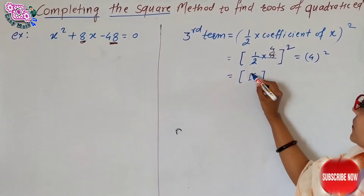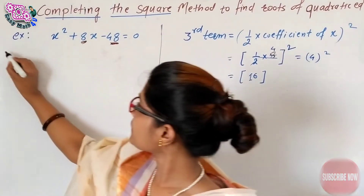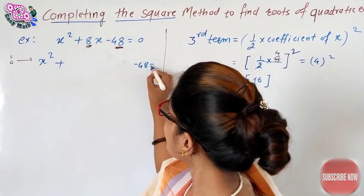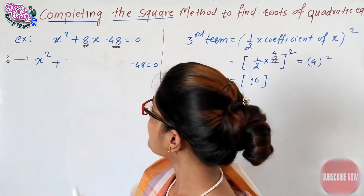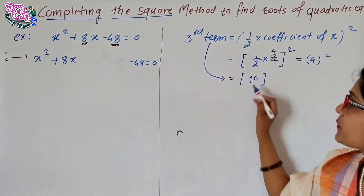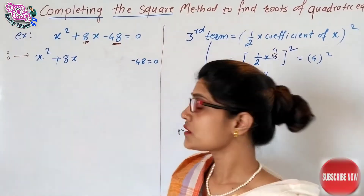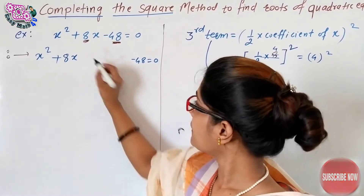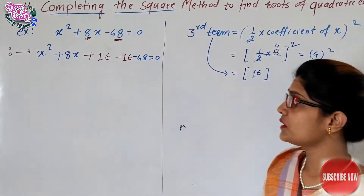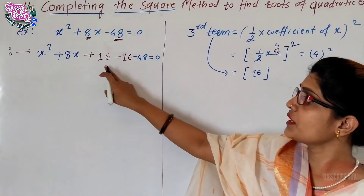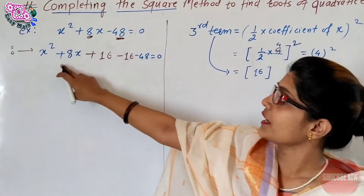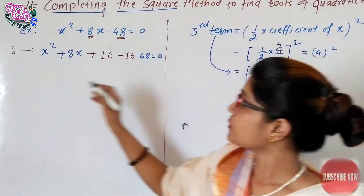So your third term is 16. Now write down the original equation: x squared plus 8x minus 48 as it is. After finding the third term, add plus 16 and then subtract minus 16 to the equation, keeping the balance.